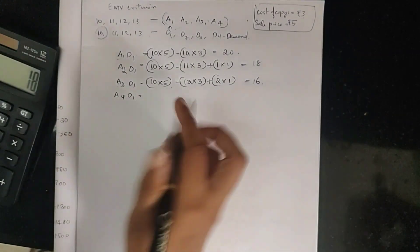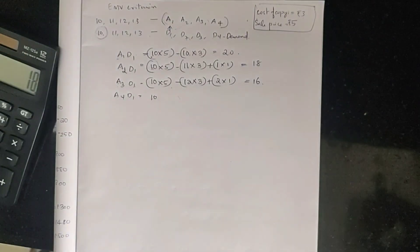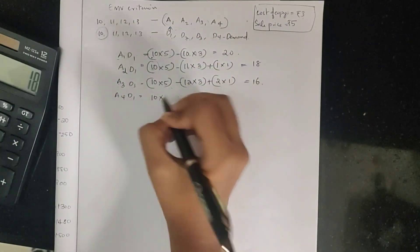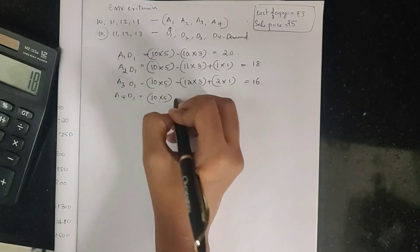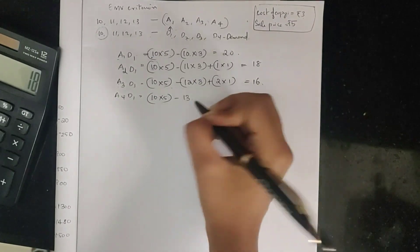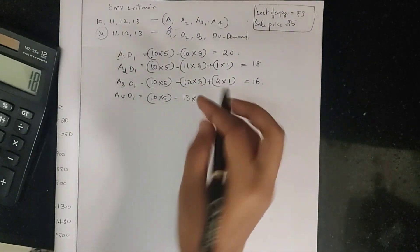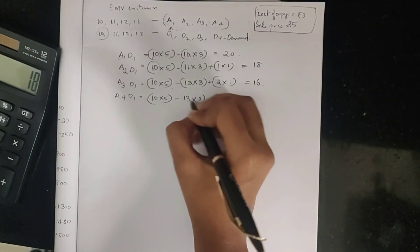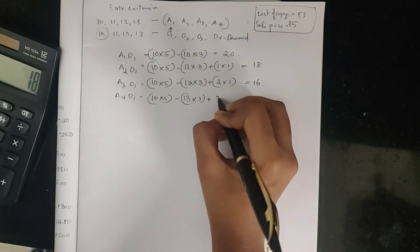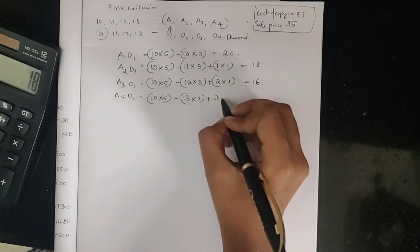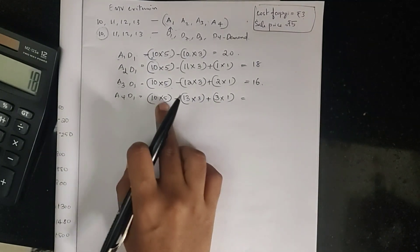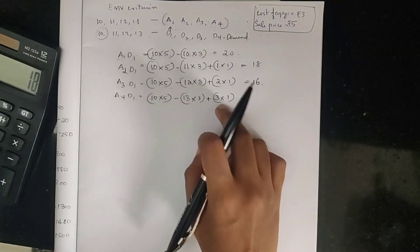For A4 (order 13) and D1 (demand 10): produce 13, demand is 10, salvage 3 extra. Payoff = 10×5 + 3×1 − 13×3 = 50 + 3 − 39 = 14.